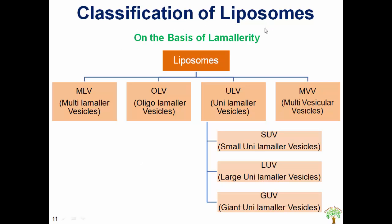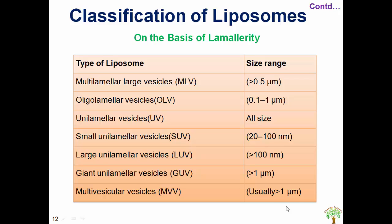Now coming to the classification of liposomes. On the first basis, liposomes are classified by the type of their lamellarity or the number of their lamellae. On this basis, liposomes are generally classified into four different categories: first, multilamellar vesicles; second, oligolamellar vesicles; third, ULV or unilamellar vesicles; and lastly, multivesicular vesicles. The unilamellar vesicles can further be classified into three types: small unilamellar vesicles, large unilamellar vesicles, and giant unilamellar vesicles. The sizes of all these different types are displayed on the slide — they are all lesser than 500 nanometers.